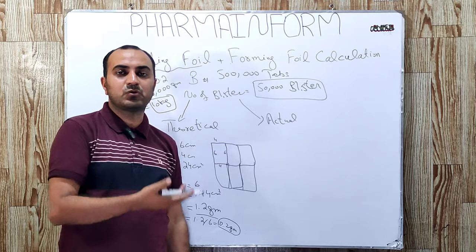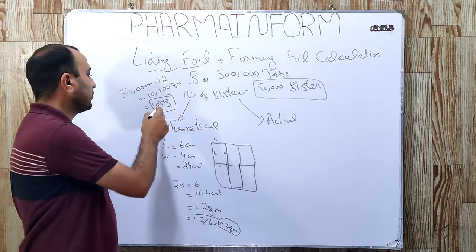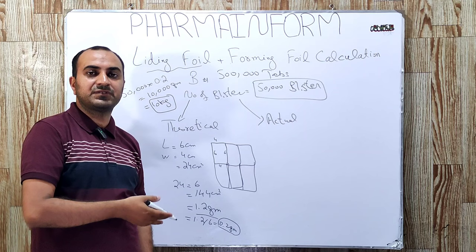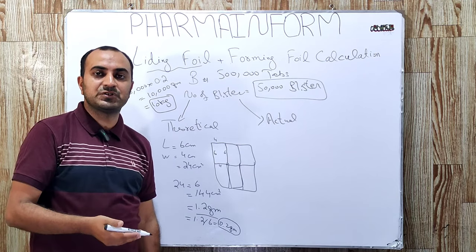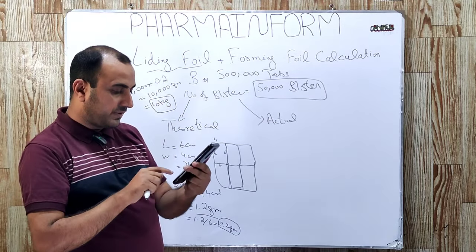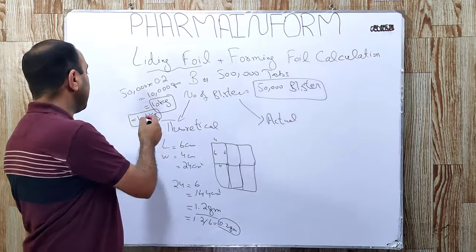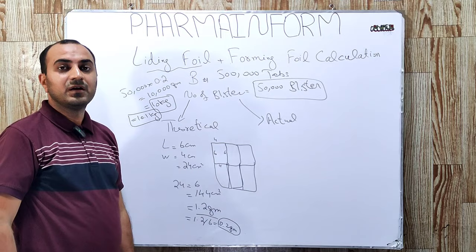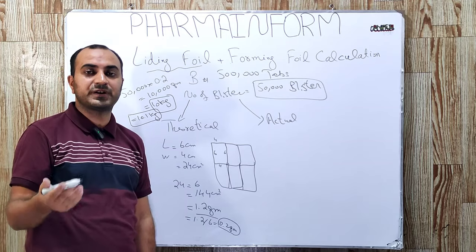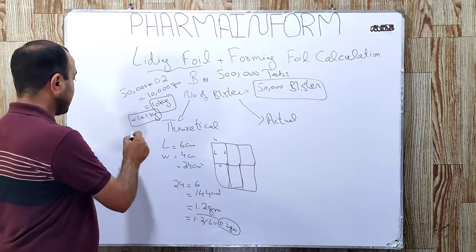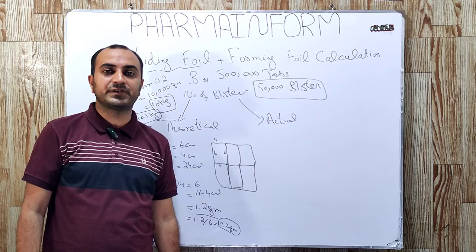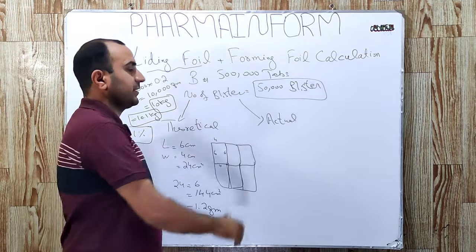We add a scrap factor of 1% to 3% depending on machine efficiency — more efficient machines require less scrap factor. Adding 1% scrap factor to our 10 kg gives 10.1 kg of leading foil. I will elaborate on how to exactly calculate the scrap factor in the second method.